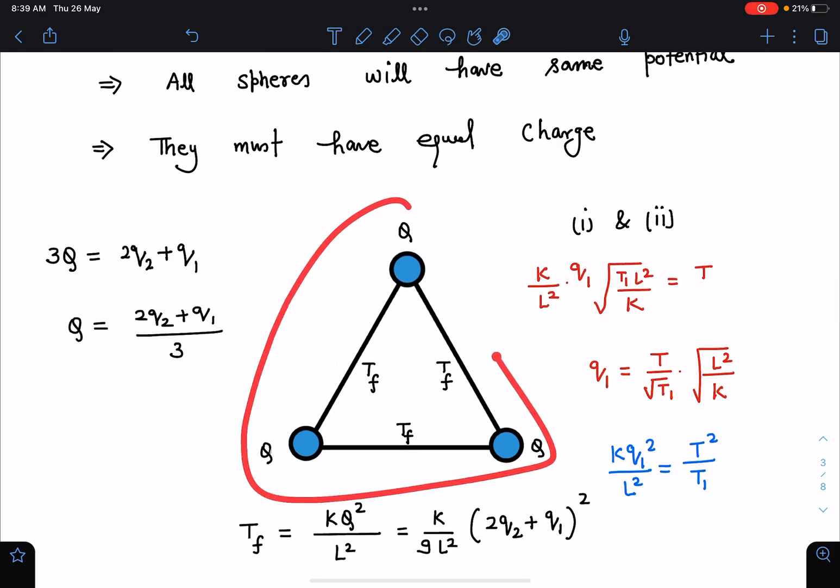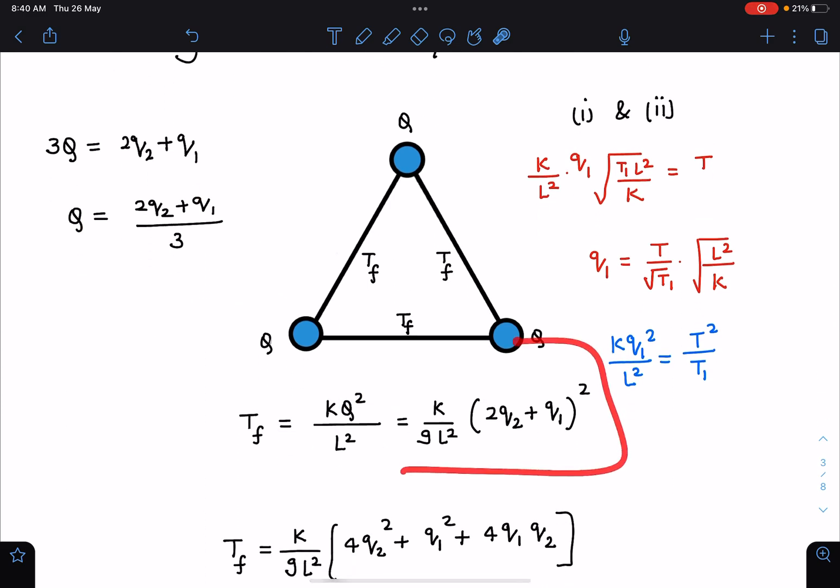Now situation is these three balls are having equal charges. Now the strings are going to have same tension everywhere and if that is the case just by balancing these two we can say TF is equal to KQ square by L square. Now this value of capital Q I am going to substitute here. I am going to get this K by 9 L square is equal to 2Q2 plus Q1 whole square.